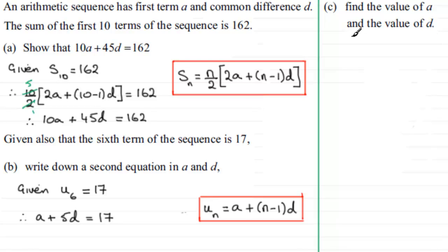Now, in the last part, part C, we've got to find the value of A and the value of D. So this is clearly going to be simultaneous equations between these two equations here. So I'm going to number this equation, equation 1, and this equation, number 2.